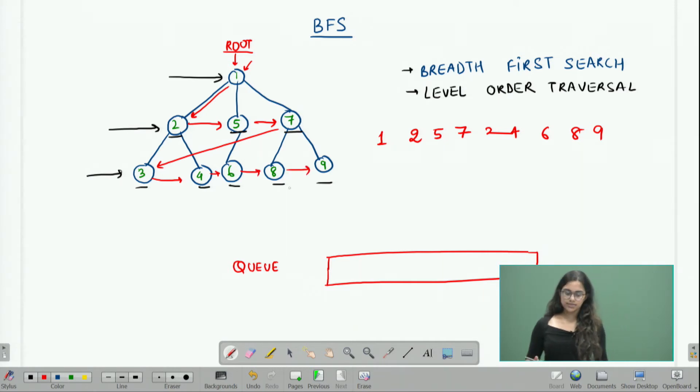Now in this case when we want to do a level order traversal, we will have to introduce something like a queue because we need to keep track of which all children we have explored yet.